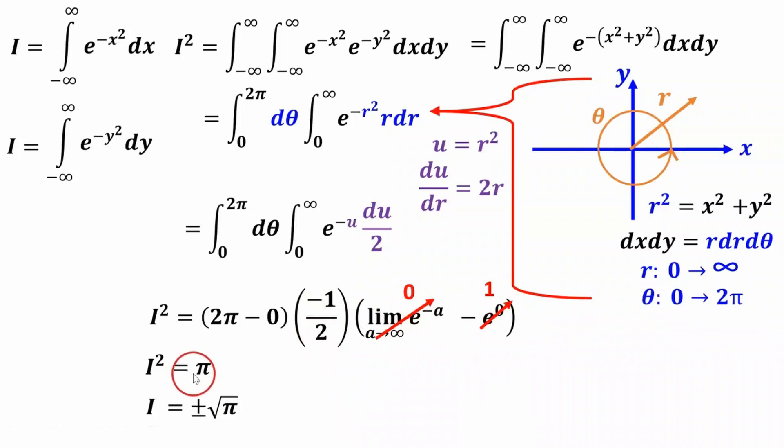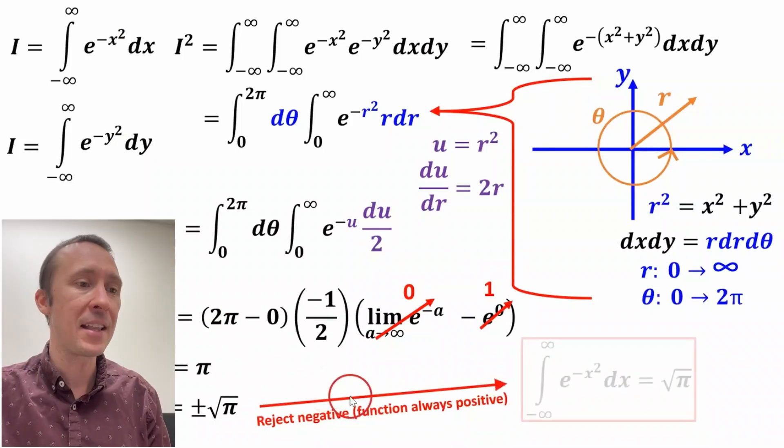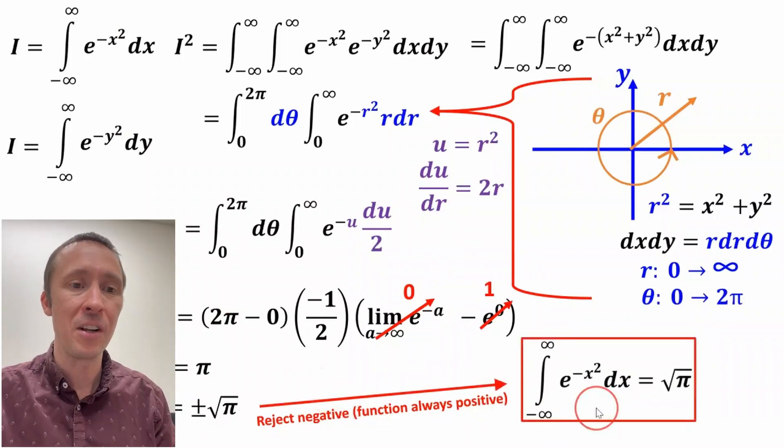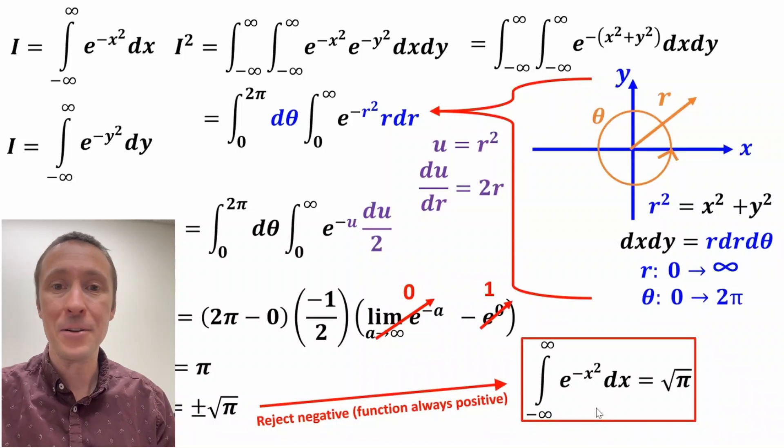And if we take the square root, we get our integral, I, is equal to plus or minus the square root of π. But we can reject the negative sign because our function that we're integrating is always above the x-axis. So it's always positive. It's always above that horizontal axis. So because of that, we can proudly say that our integral is √π, and we're done.